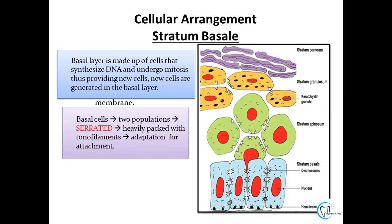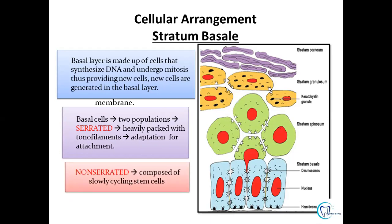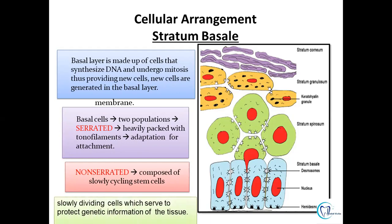The basal layer has two cell populations: serrated and non-serrated. The serrated layer is heavily packed with tonofilaments and provides attachment via desmosomes and hemidesmosomes. The non-serrated layer comprises stem cells that are slow dividing and protect the genetic information of the tissue. The hierarchy proceeds: basal layer differentiates into spinous layer, spinous into granular layer, then stratum corneum, after which cells shed off.